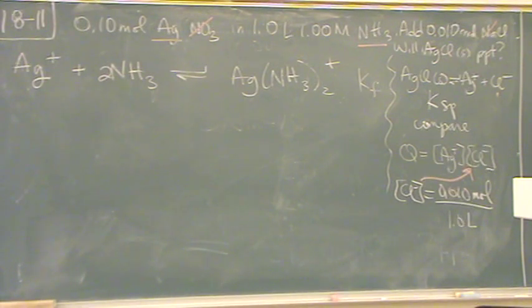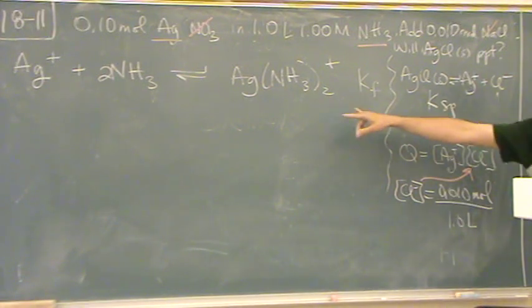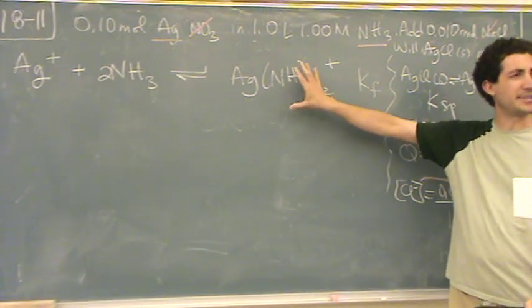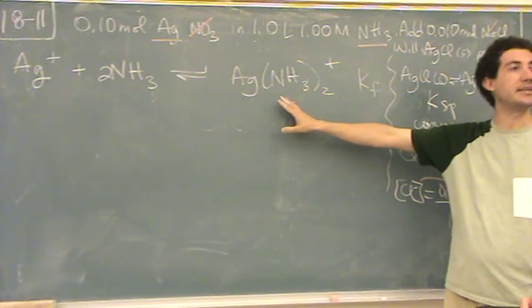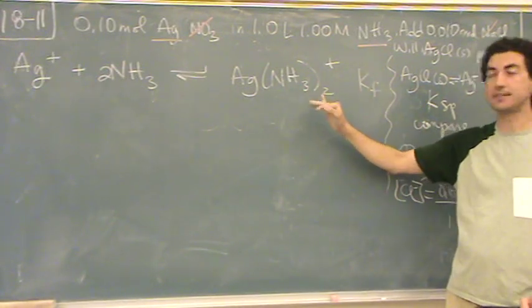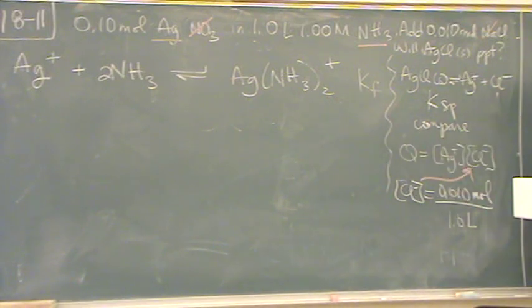When you have transition metals, there's a special K, just like KSP. It looks a little bit backwards of KSP. Usually this would be a solid, and then you go to the ions. Well, this happens to be aqueous, and you're forming everything, and this is aqueous. KF happens to be a huge number, like 10 to the 8, 10 to the 10. Big numbers. It's exactly the opposite of KSP. Huge numbers for KF. So the forward reaction is very favorable.